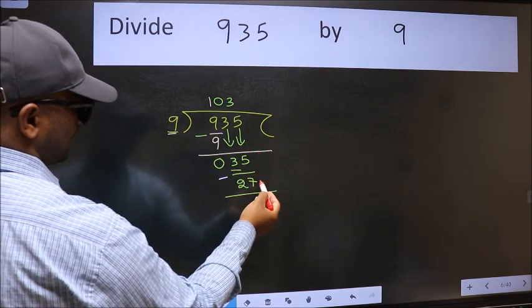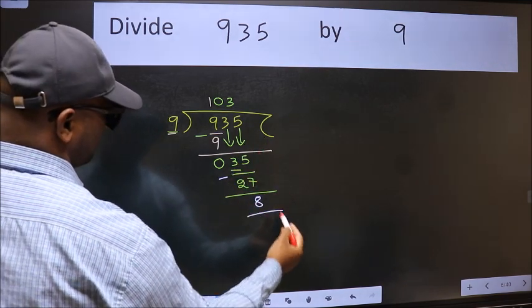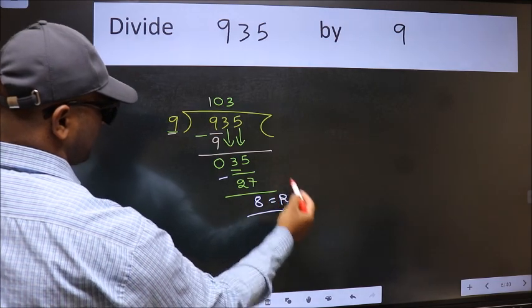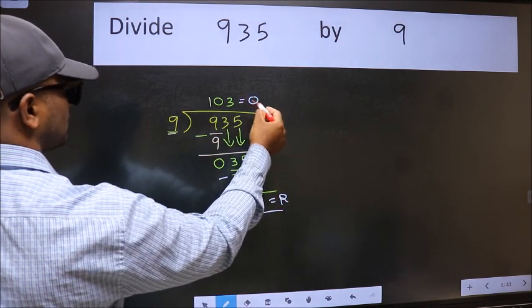No more numbers to bring it down. So we stop here. This is our remainder and this is our quotient. Thank you.